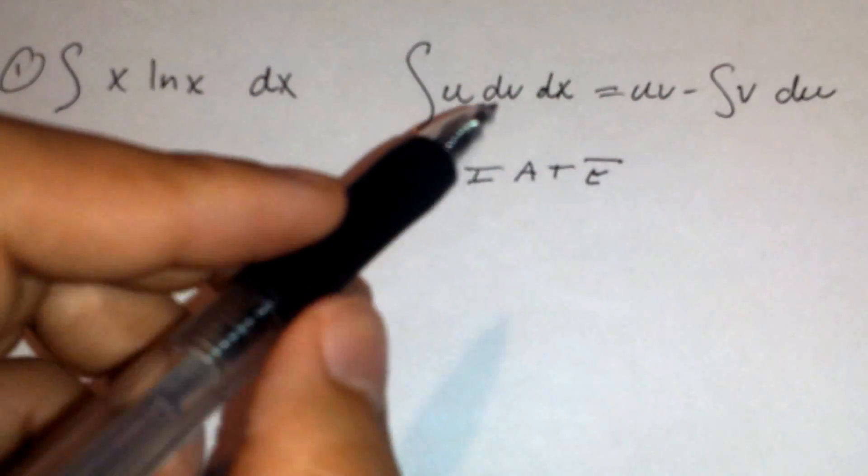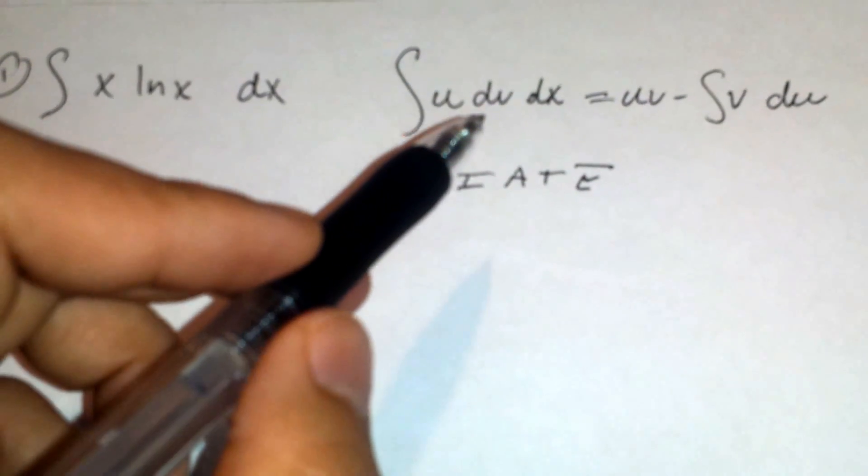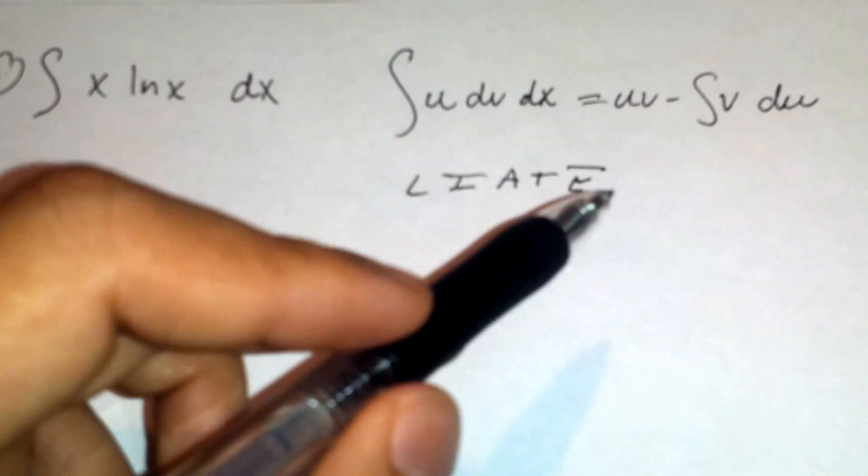To do this problem, we'll use this rule: the integral of u dv dx equals u times v minus the integral of v du.